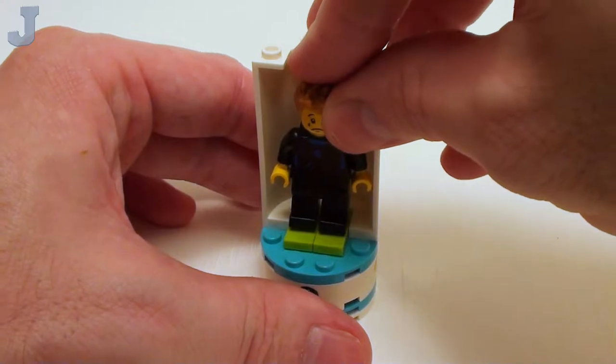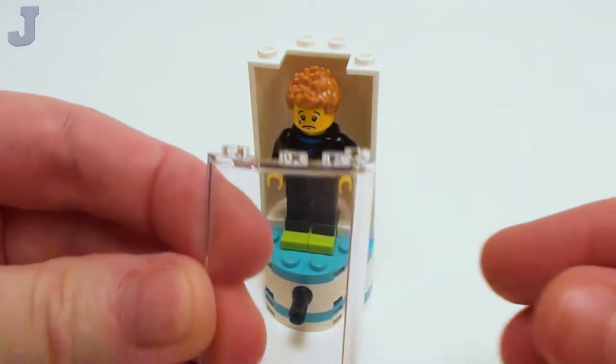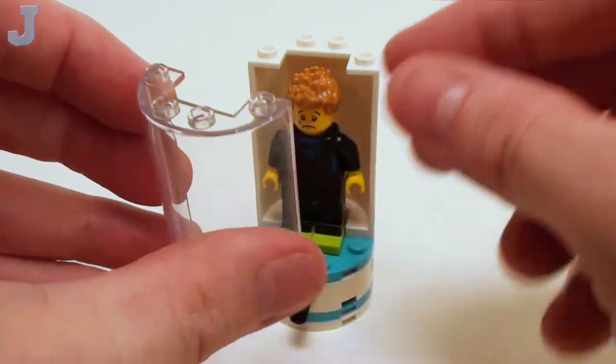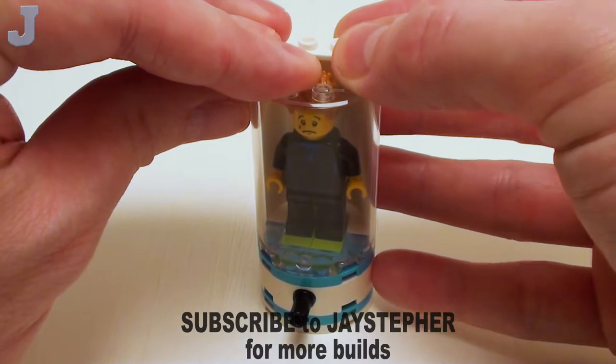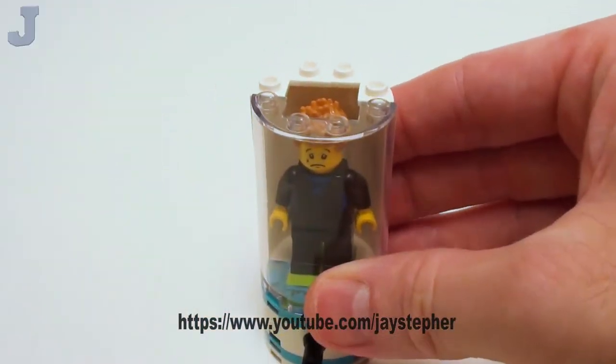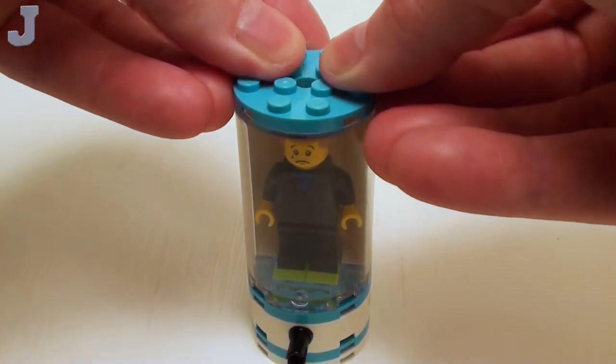Now let's take a transparent clear 2 by 4 by 5 half round wall element. Set that right in there. And I want to crown this off with a 4 by 4 round plate.